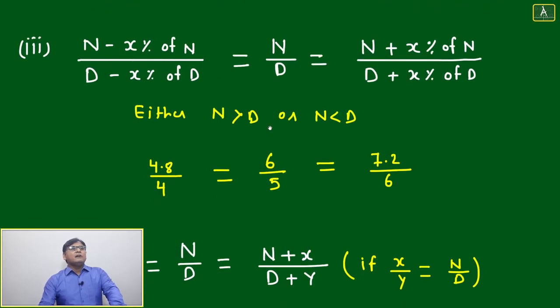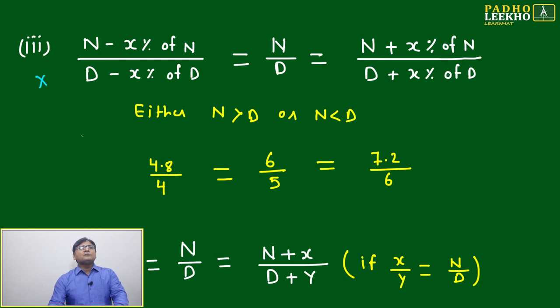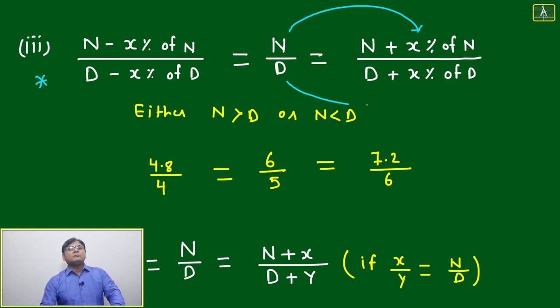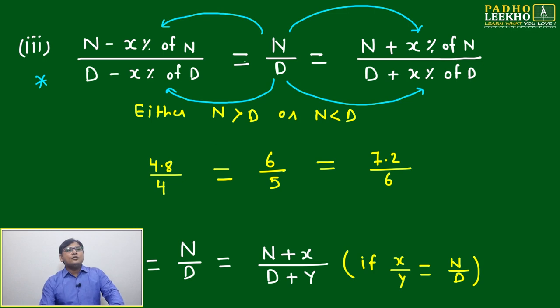Before understanding that, we'll look at one of the important properties of ratio. If you are making a change in percentage terms—like the numerator is added by x percentage of N and the denominator is added by x percent of D, or the numerator is subtracted by x percent of N—then the ratio will always be equal.